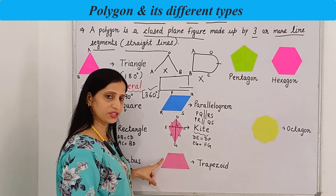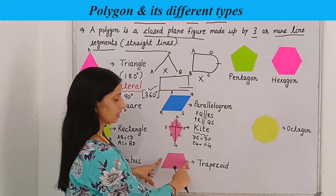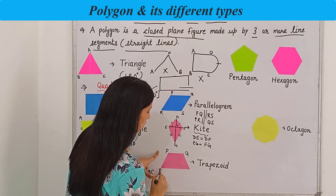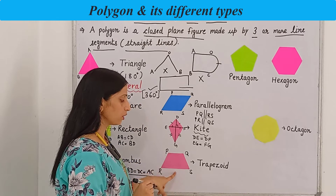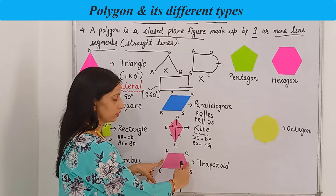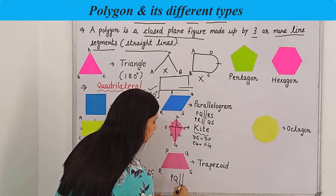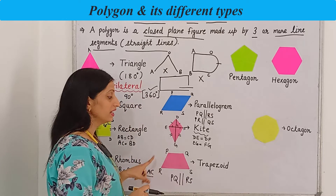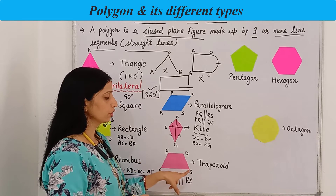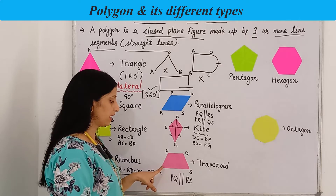Our next shape is a trapezoid. In a trapezoid, naming it PQRS, one pair of opposite sides will be parallel and one pair will be non-parallel. PQ is parallel to RS, but PR is not parallel to QS. In an isosceles trapezoid, PR equals QS. The sum of adjacent angles will be 180 degrees.